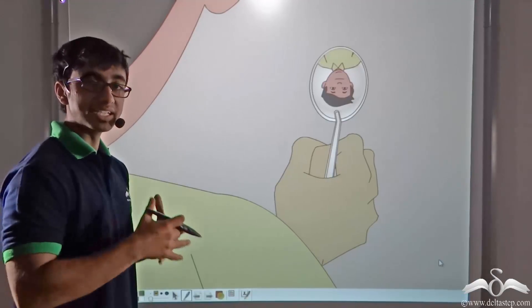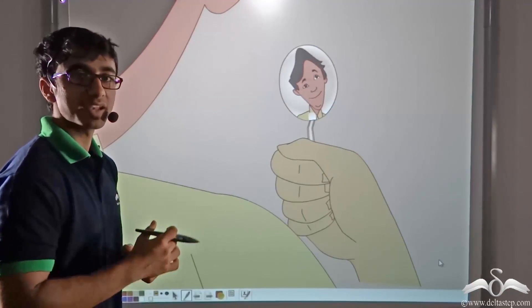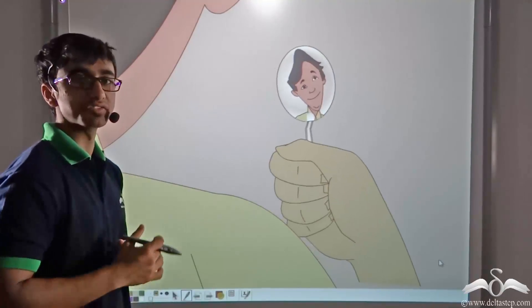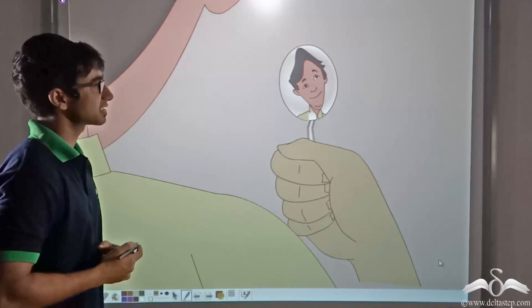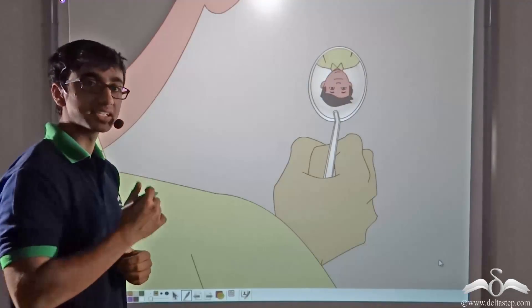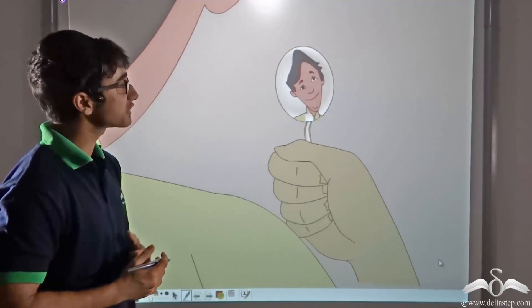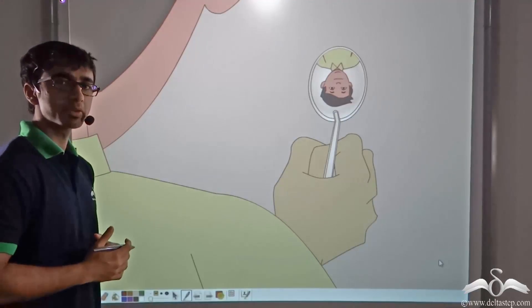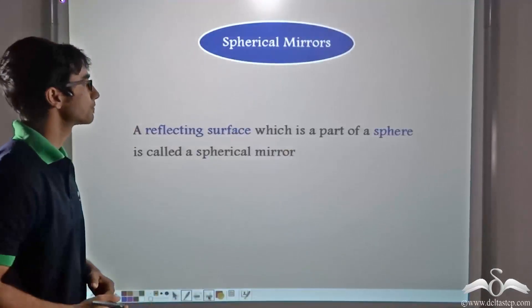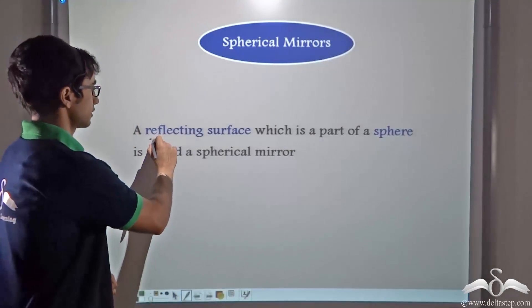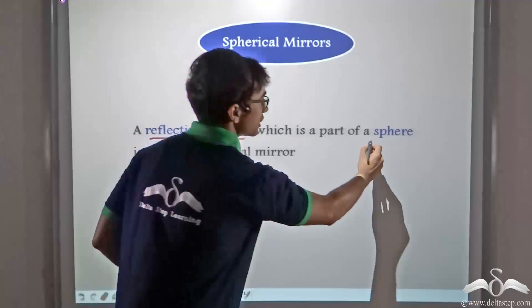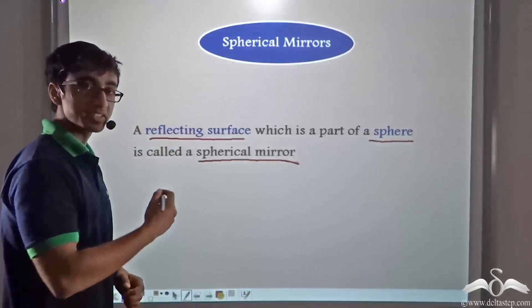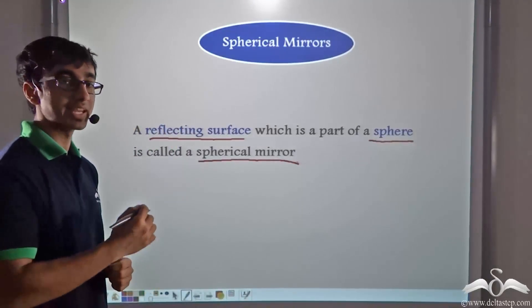Now before we delve into the details of this, let me tell you that reflection takes place not only from a plain mirror but also from spherical surfaces. In this case, the spoon surface is a spherical surface and these surfaces are capable of reflection as well. A reflecting surface which is a part of a sphere is known as a spherical mirror. So in the previous case, the spoon behaved like a spherical mirror.